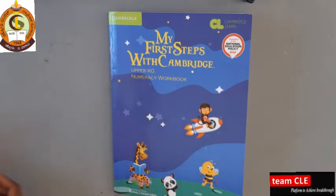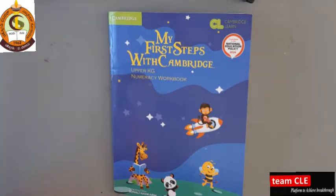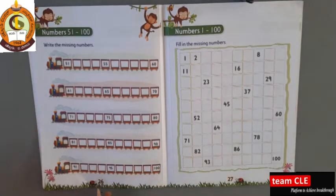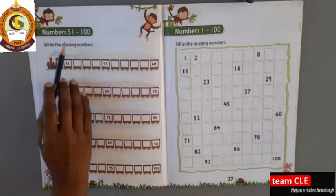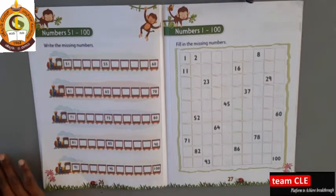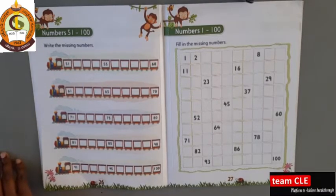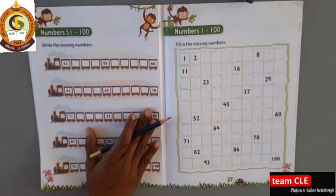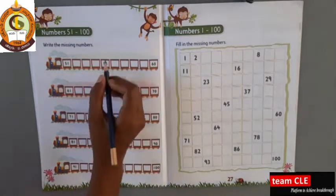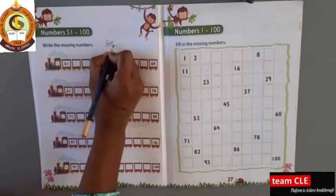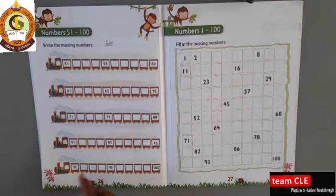Okay. So in the university workbook, everyone take out your university workbook. Take out your pencil and eraser. Open page number 26. Okay, 26. Write the missing numbers. So you know the numbers 1 to 100. You have to write it. Only classwork. So right here, first page, CW.